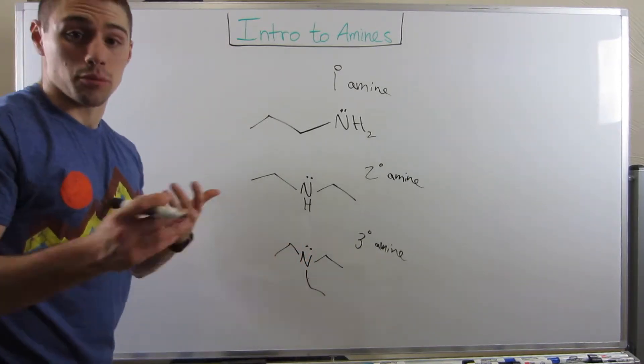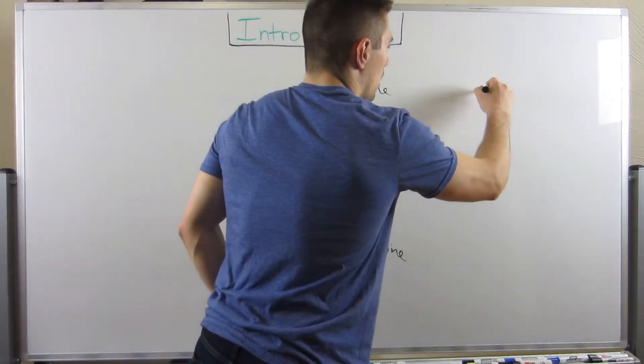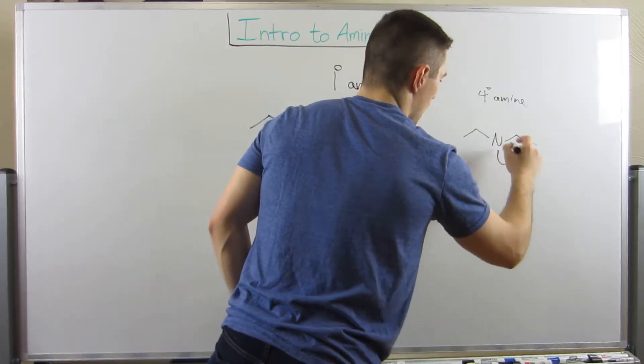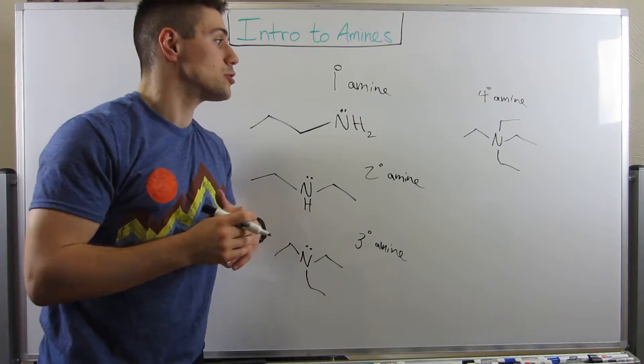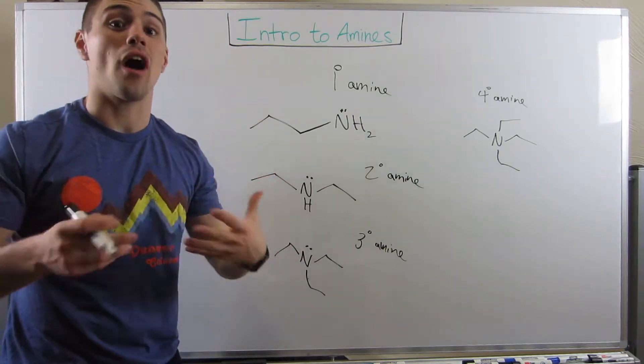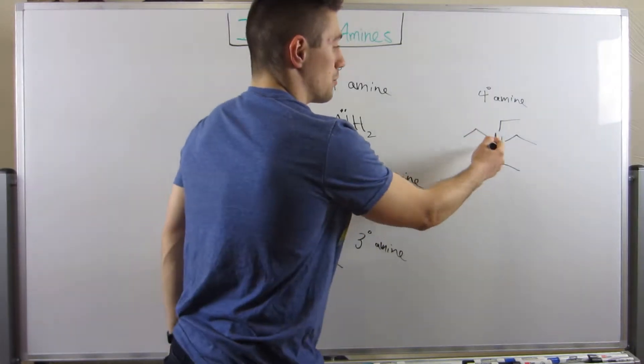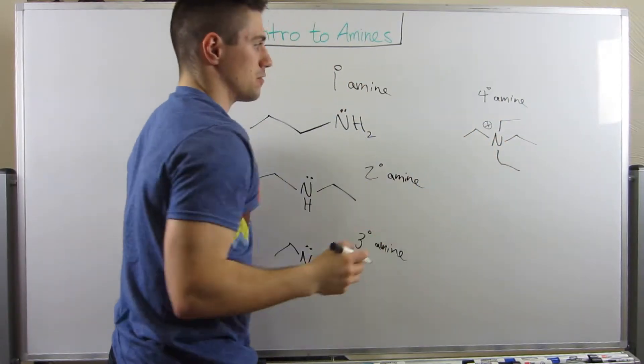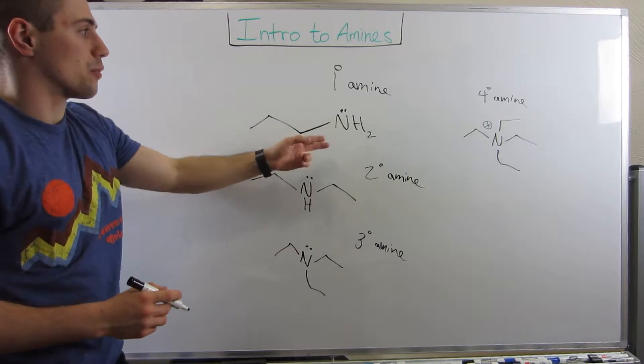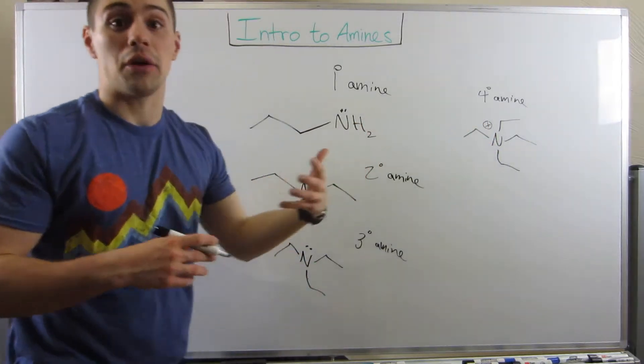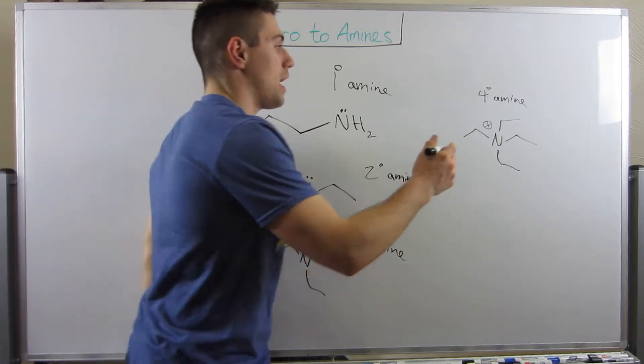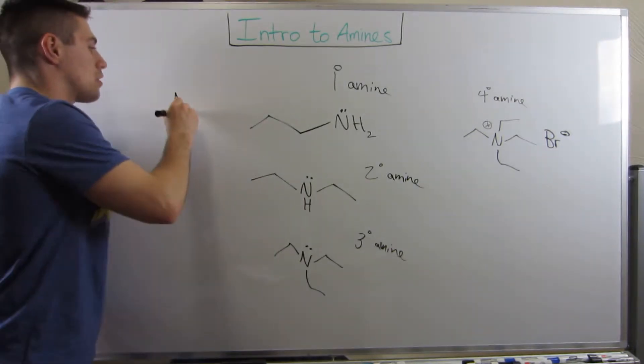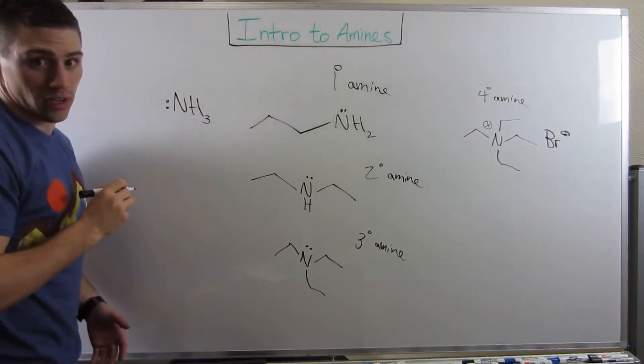And you can even go so far as a quaternary amine. If I just add an extra ethyl group on this guy, think about it - nitrogen is in the fifth column. He likes to have a five formal charge. If we just split the bonds, one, two, three, four, this nitrogen would have a positive charge. This is a quaternary ammonium salt. Usually you'd have something like Br- to balance that out. But let's not forget, this all stems from ammonia.